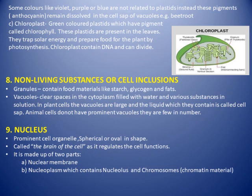The third type of plastid is the chloroplast — green-colored plastids containing the pigment chlorophyll, present in leaves. They trap solar energy and prepare food for the plant by photosynthesis. Importantly, chloroplasts contain their own DNA and can divide and multiply to form more chloroplasts according to the cell's needs.